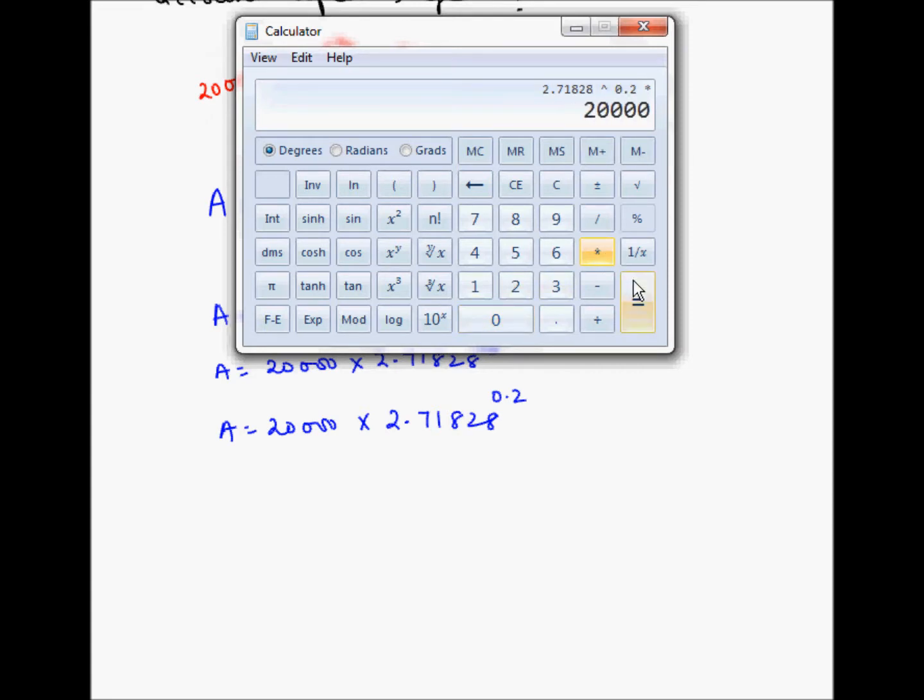And this is equal to 24,428 rupees. So A is equal to 24,428 rupees.